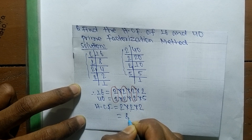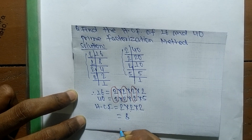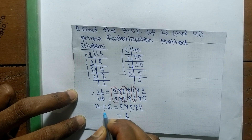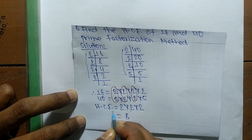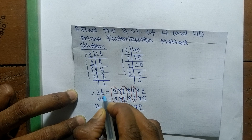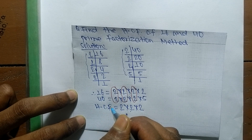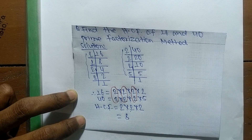So 8 is the highest common factor of 16 and 40. That's all for today — thanks for watching.